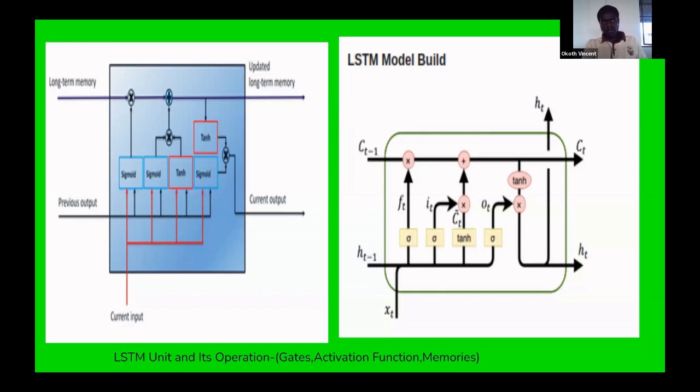This is done by use of what you call gates. We have forget gate that removes what is not important. We have input gate that takes what was in previous memory and what is important kept in long-term memory. Then we have output gate that updates the memory.